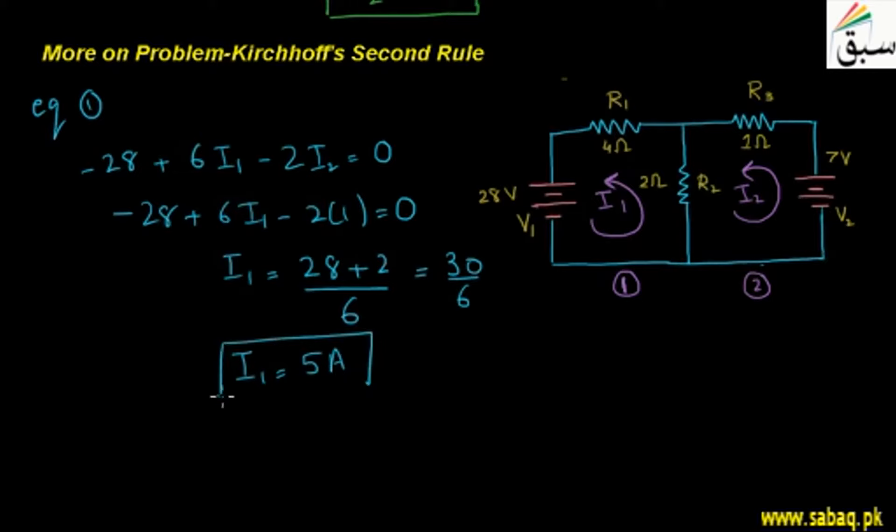Now we can see that we have the resistances R1, R2, R3, through which currents pass. Here we can see R1 that only I1 passes through, and through R3 only I2 passes.